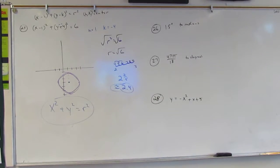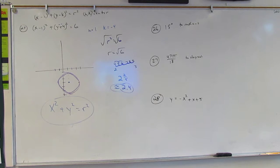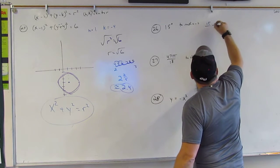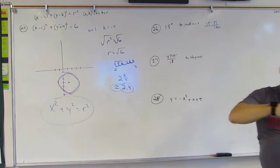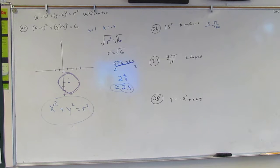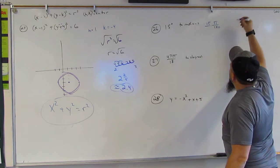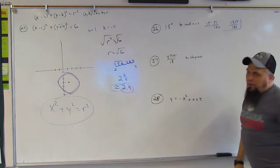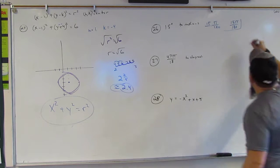Now — 15 degrees. How do we change this into radians? You multiply by pi over 180, because pi and 180 are the same thing. So that gives us 15π over 180. Now what goes into both 15 and 180?